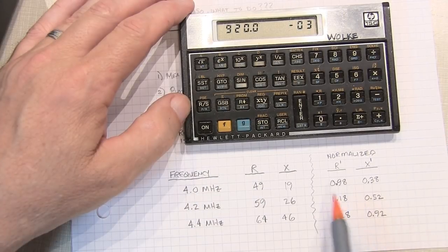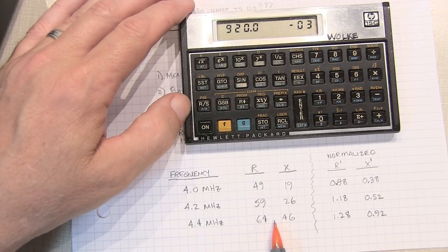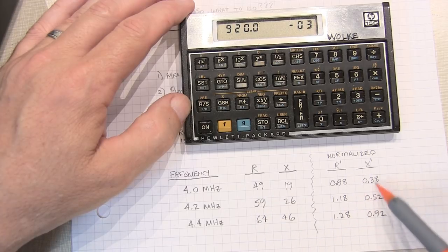In order to plot these values on the Smith chart, we've got to normalize them to our system impedance of 50 ohms. That's simply taking each of these values and dividing them by 50. I just finished completing those, so these are the values that we're going to plot on the Smith chart.